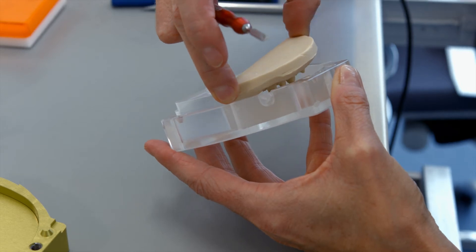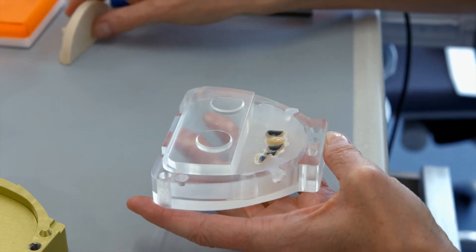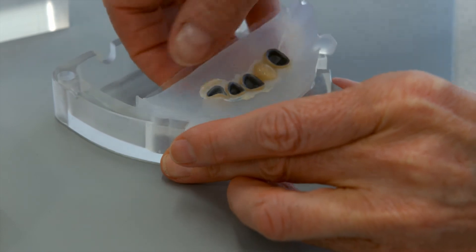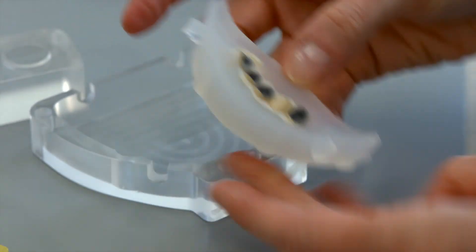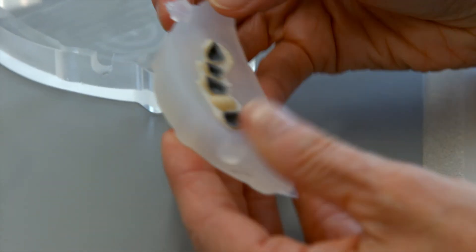When the SR-NEXCO material is polymerized, separate the flask halves. Carefully lift the silicone from the upper flask half and then remove the cured Denton-covered restoration.